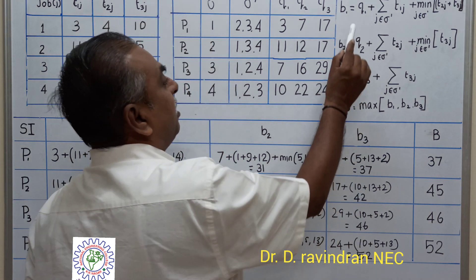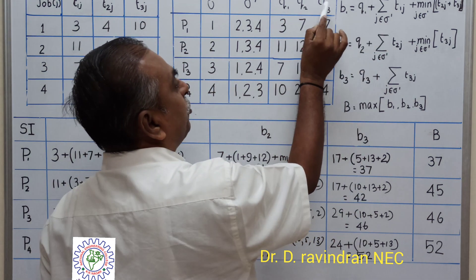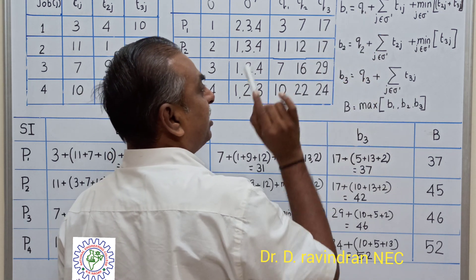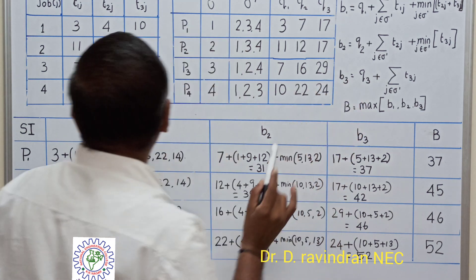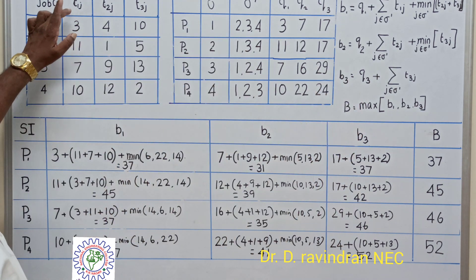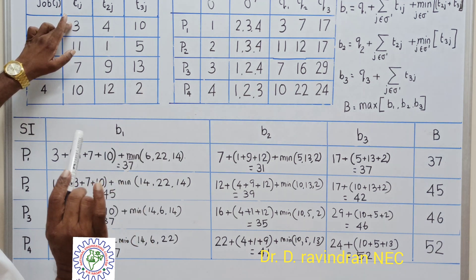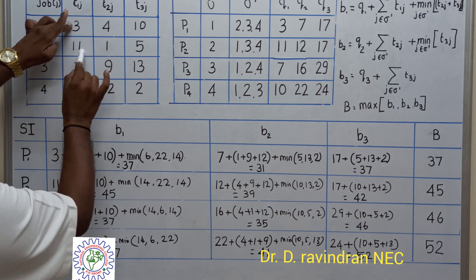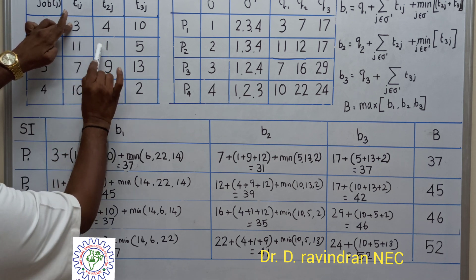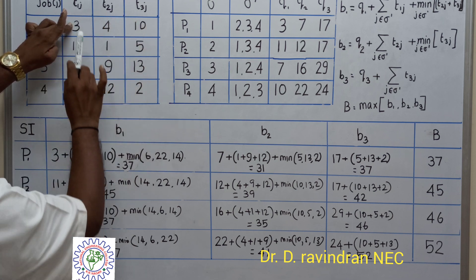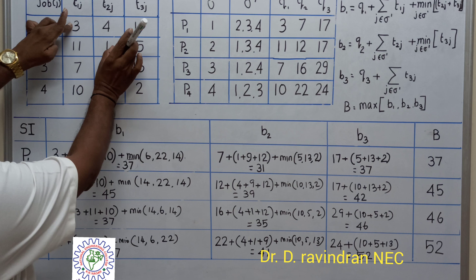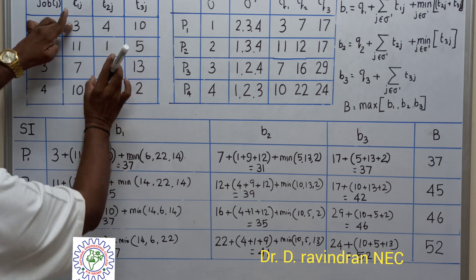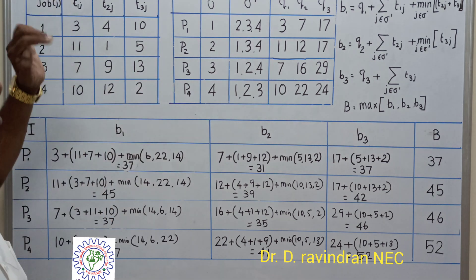Now we evaluate three constants B1, B2, B3 at this first stage. B1 is based on Q1, B2 on Q2, and B3 on Q3. The lower bound for a partial sequence is computed as: the completion time Q plus the sum of remaining processing times on subsequent machines, plus the minimum remaining processing time on the last machine.